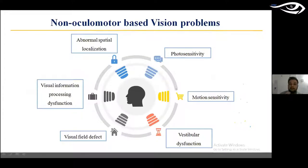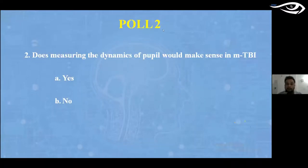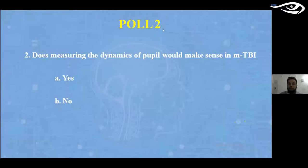Moving to non-oculomotor based visual problems: a poll was conducted asking whether measuring pupil dynamics makes sense in mild TBI. Since TBI is a neurological condition, any neuro-based ocular problem has a secondary impact on the pupils, making it very important to measure pupil dynamics.